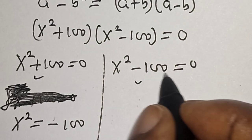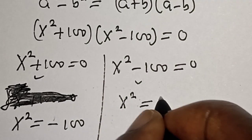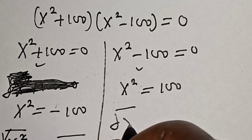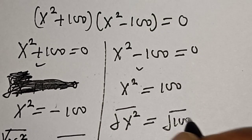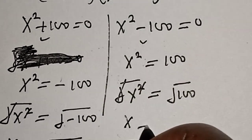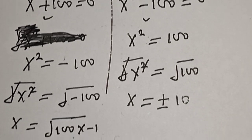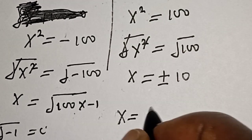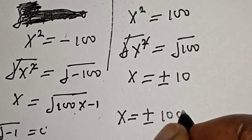Now let's solve the second case: s² − 100 = 0, so s² = 100. Taking the square root of both sides, √(s²) = √100, giving s = ±10.